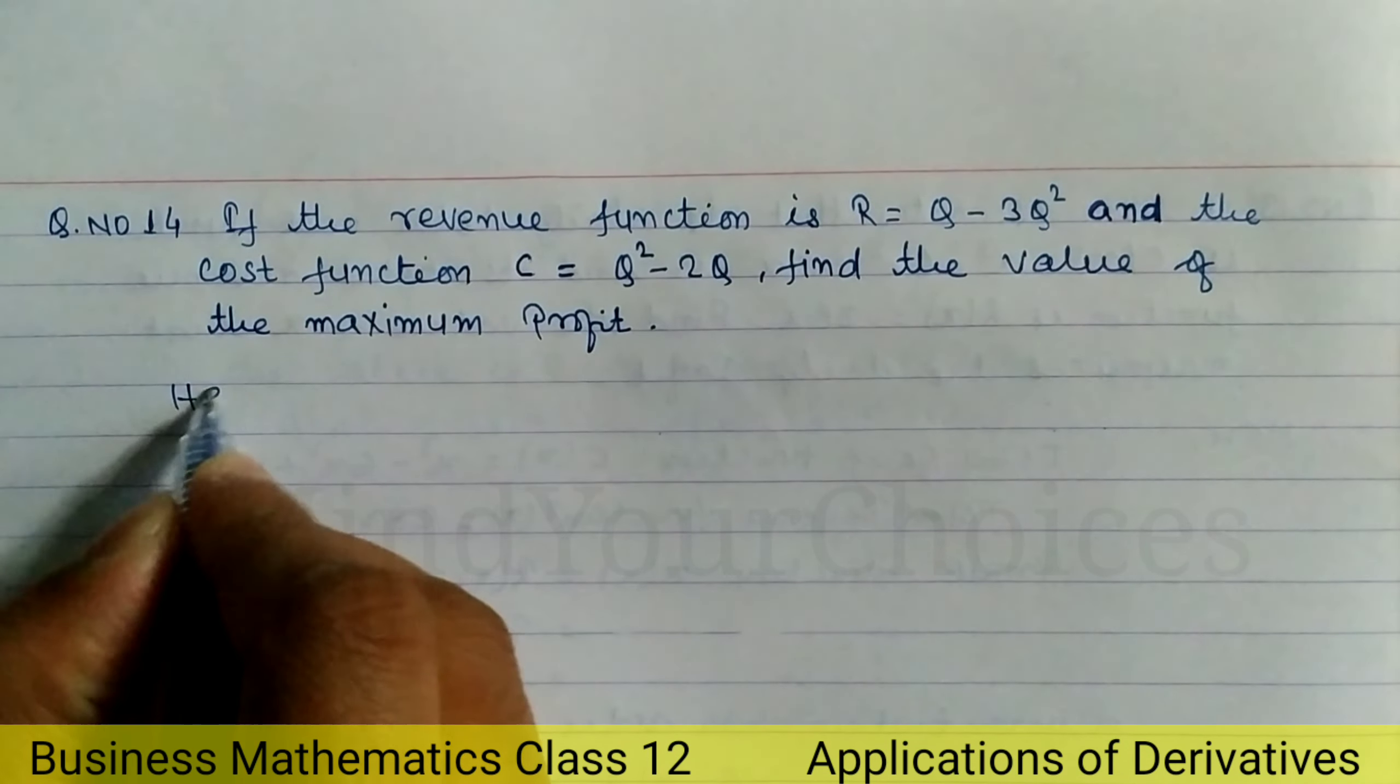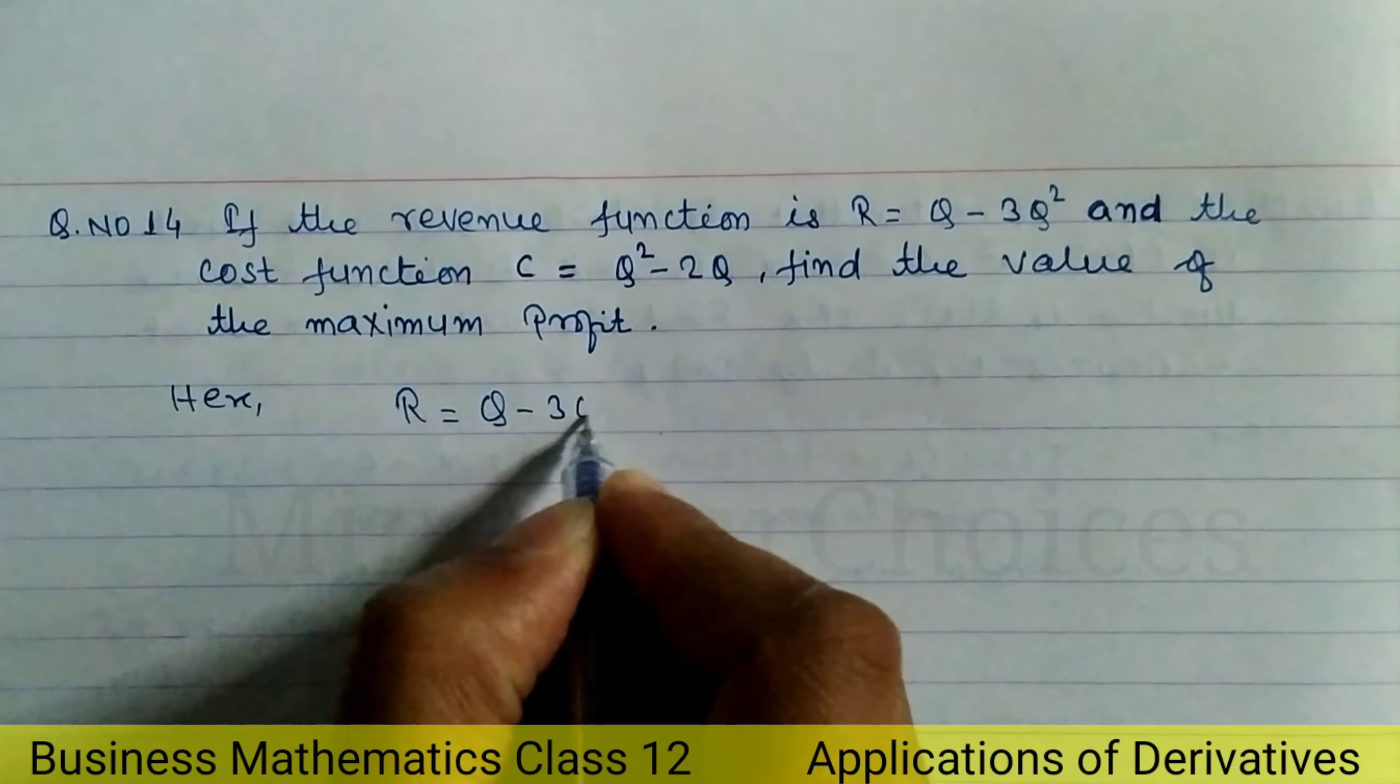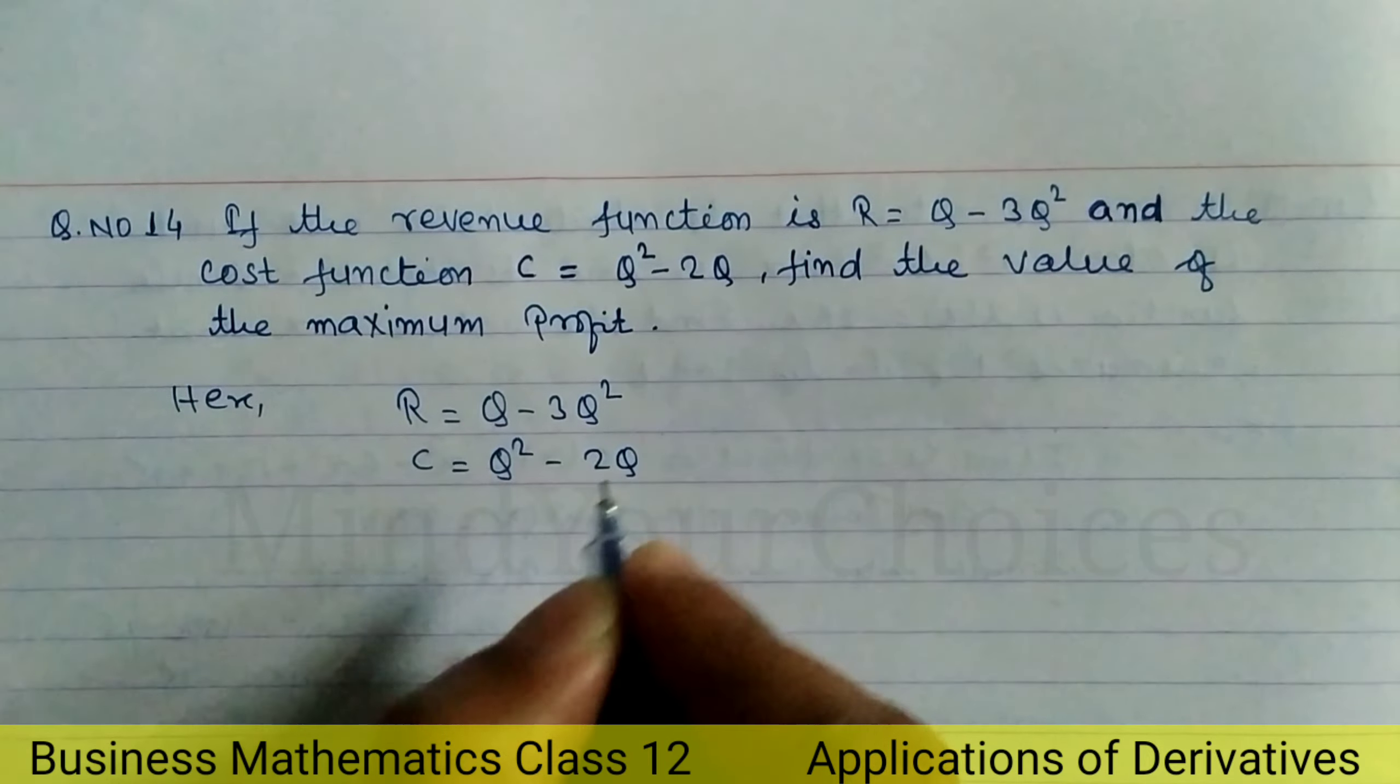So here, revenue R equals Q minus 3Q square, and the cost function C equals Q square minus 2Q. Now we have to find out profit.